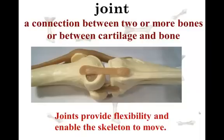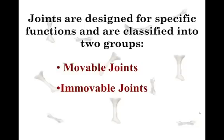Joints provide flexibility and enable the skeleton to move in a lot of different ways than other organisms that do not have that, especially like exoskeletons. Joints are designed for a specific function and they're classified into two groups: movable joints and immovable. Some books and labs will have three — immovable, slightly movable, and freely movable joints.